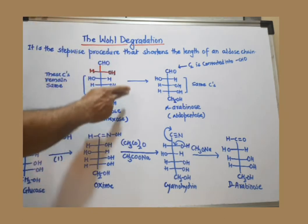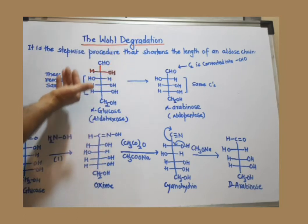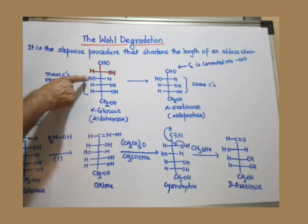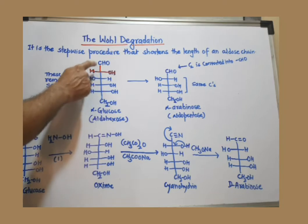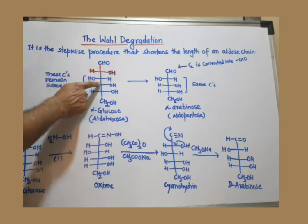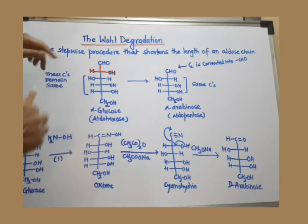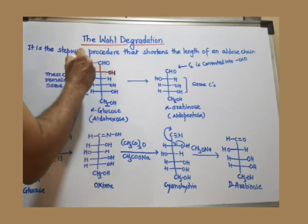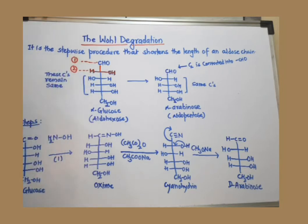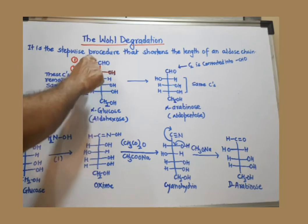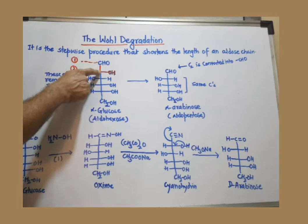The example taken here is glucose. Everyone knows the structure of glucose, where the configuration of the hydroxyl group differs only at carbon number 3. This is carbon number 1, carbon number 2, carbon number 3, carbon number 4, and carbon number 5. The cleavage — the bond-breaking process — takes place here between carbon number 1 and carbon number 2.